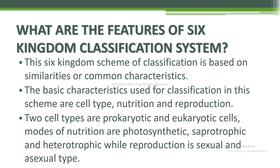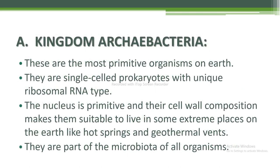So next is the question: what are the features of the Six Kingdom Classification System? This six kingdom scheme of classification is based on similarities or common characteristics. The basic characteristics used for classification are cell type, nutrition, and reproduction. Two cell types are prokaryotic and eukaryotic. Modes of nutrition are photosynthetic, saprotrophic, and heterotrophic, while reproduction is sexual and asexual.